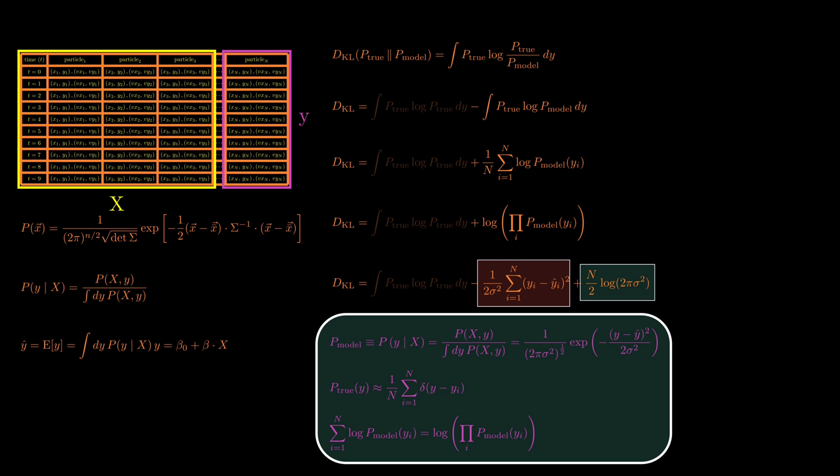So, maximizing the log likelihood is the same as minimizing the sum of squared differences between predicted and actual values. This quantity is known as the residual sum of squares, or RSS. It measures how far our predictions are from the actual values, and is the standard loss function in linear regression.